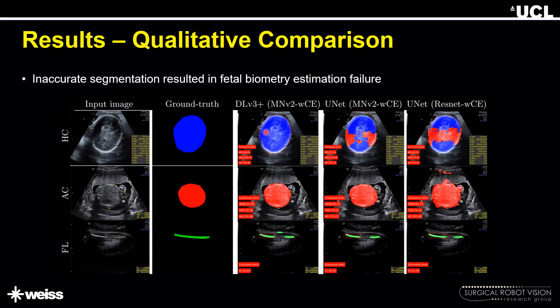Qualitative analysis of the three segmentation models is shown in this slide, where we can see scenarios where either one or all segmentation models fail in predicting the right segmentation mask. We can make two observations: first, inaccurate segmentation results in fetal biometry estimation failure; and second, if the captured ultrasound is not of good quality, the segmentation mask can be inaccurate, which can result in inaccurate measurements.